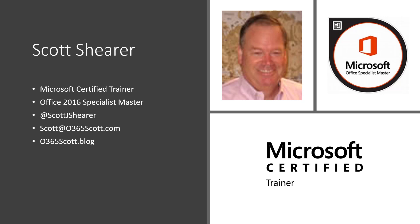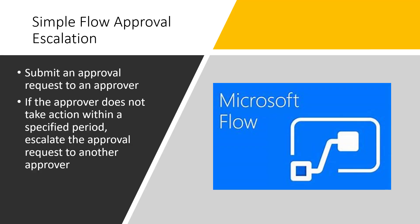Here is our use case: you have a SharePoint list where items for approval are submitted. Once an item is submitted, an approval action is assigned to an approver. If that approver does not take action in a reasonable amount of time that we specify, we want that approval canceled and a new approval action assigned to a new approver.